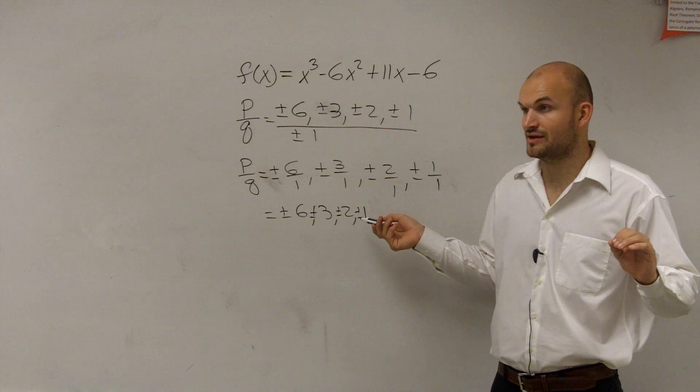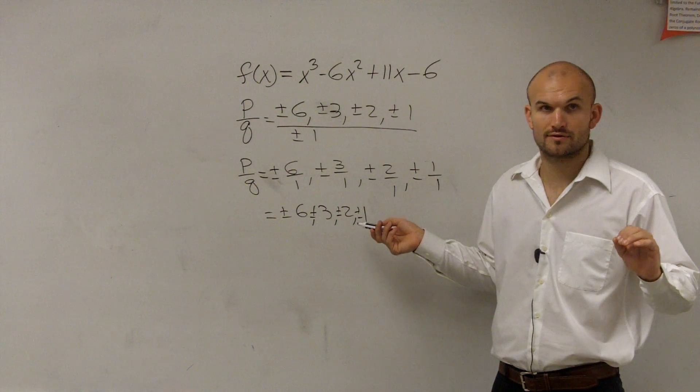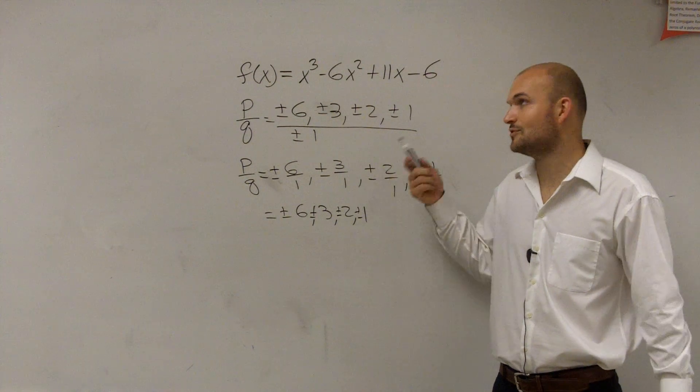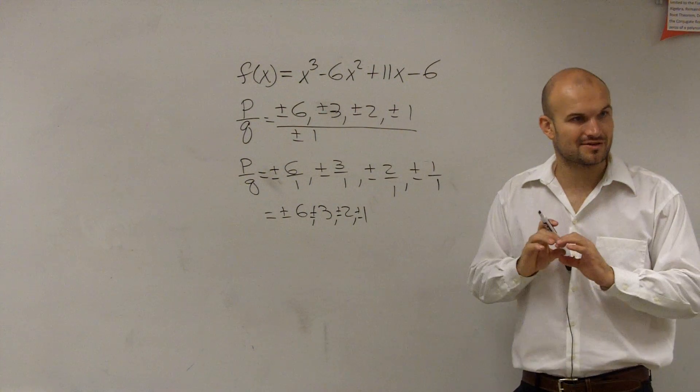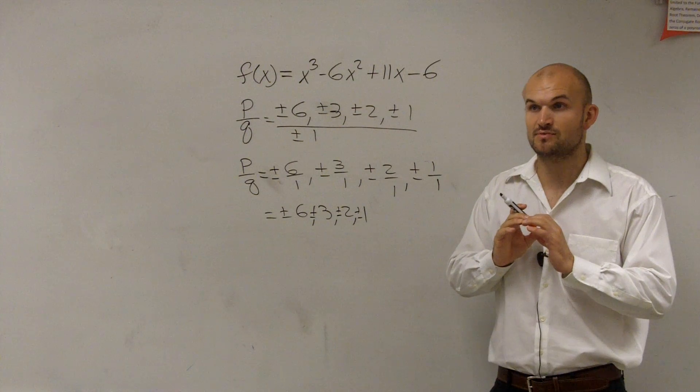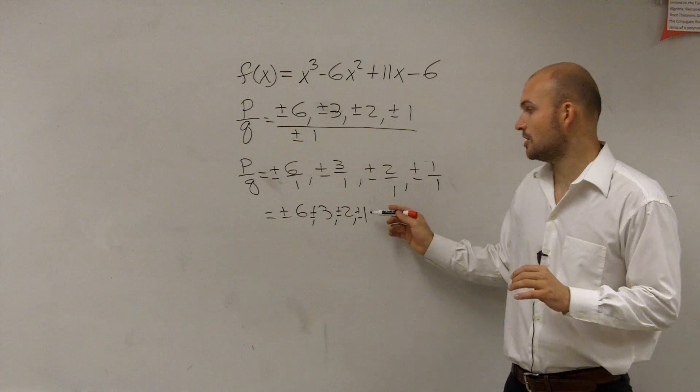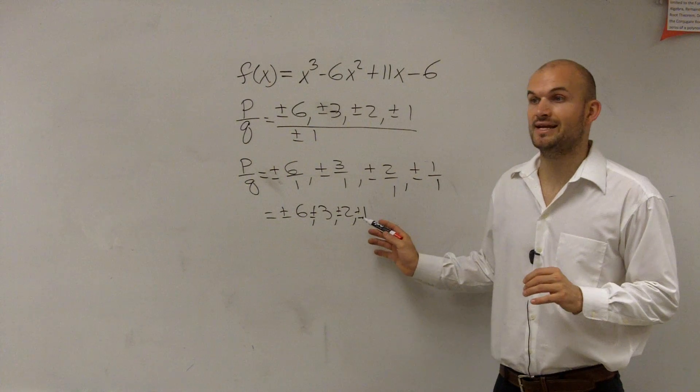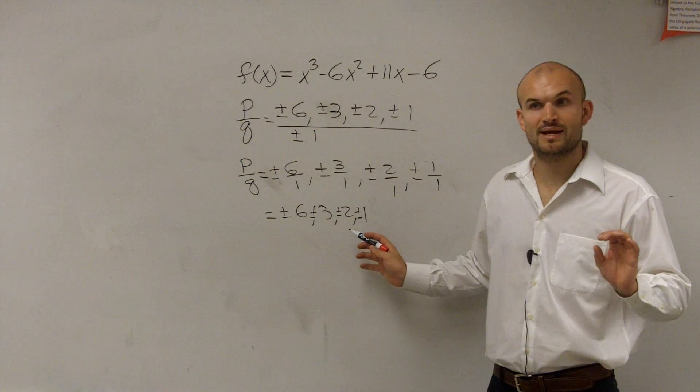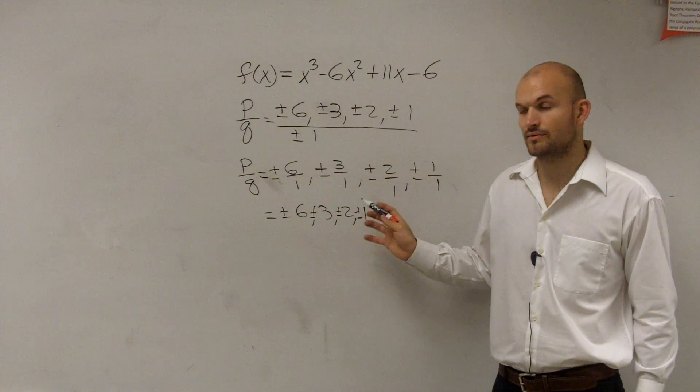If you get negative 1, does that tell you you have a zero? No. Well, if you plug in negative 1 and you get a remainder 0, then is that a zero as well? Yes, it is. So whenever you use synthetic division for any of these numbers, if you get a 0 as a remainder, you know it's a zero.